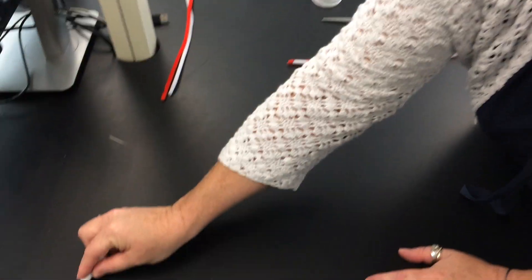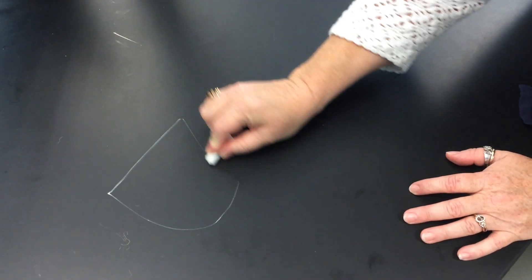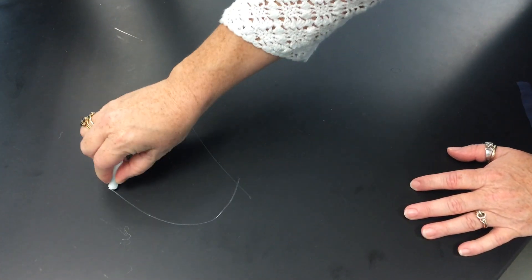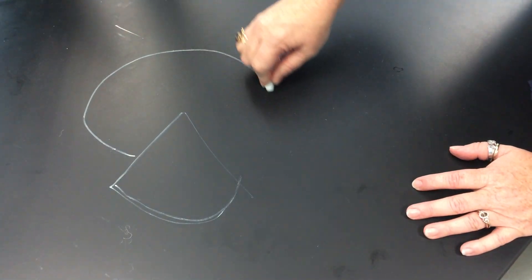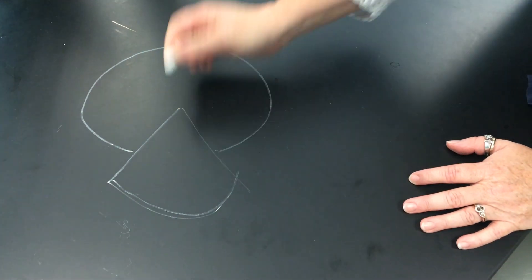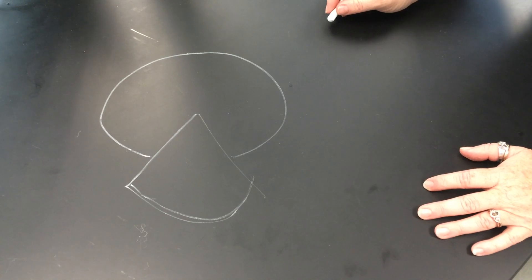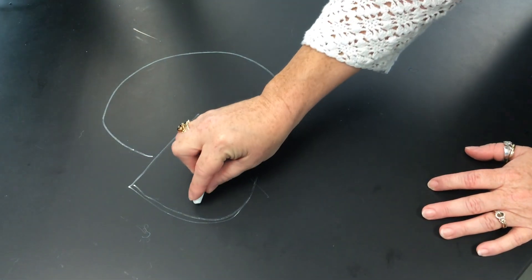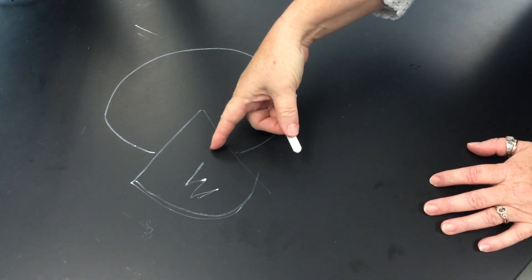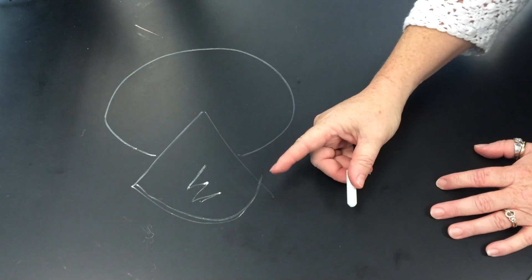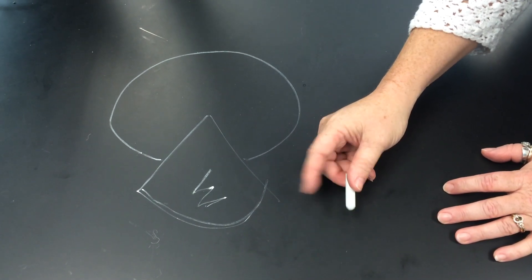Let's talk about the cell cycle. The cell cycle is Pac-Man eating a piece of candy corn. What we see here is that this is the M phase — so this is prophase, metaphase, anaphase, and telophase. You guys all talked about that in lecture.